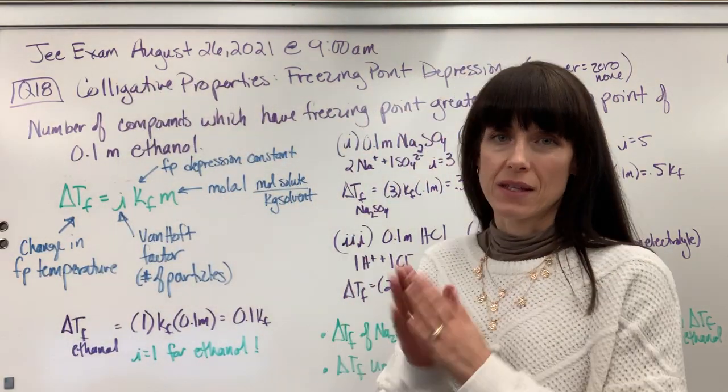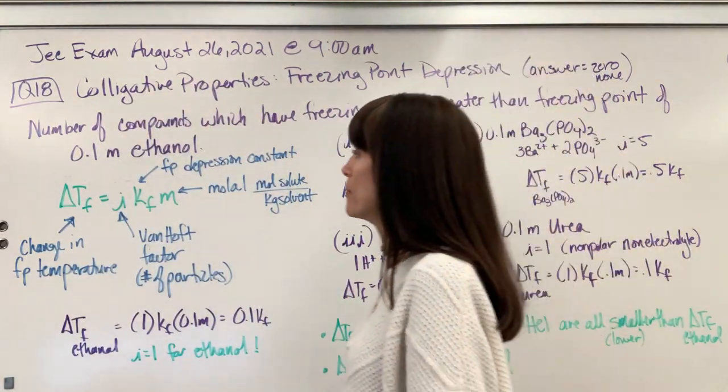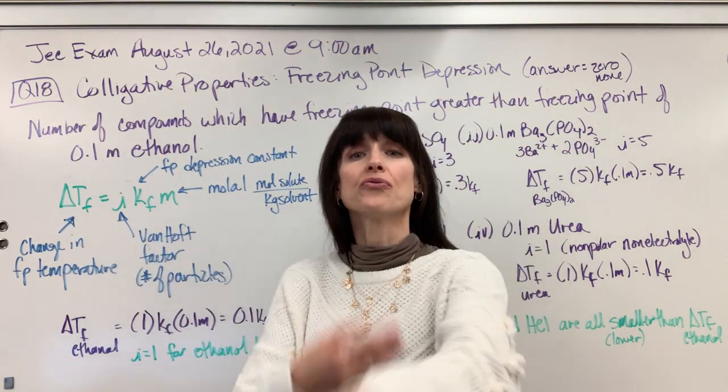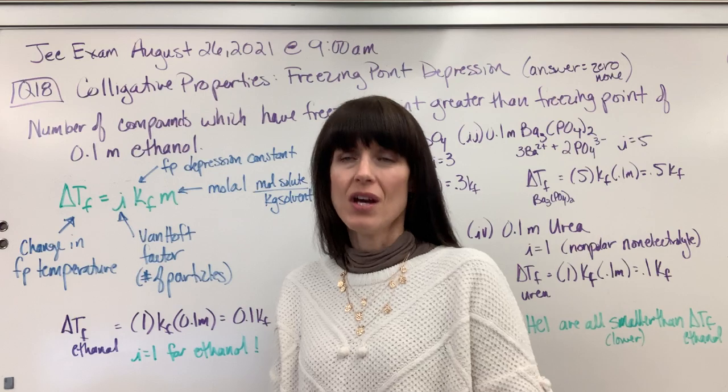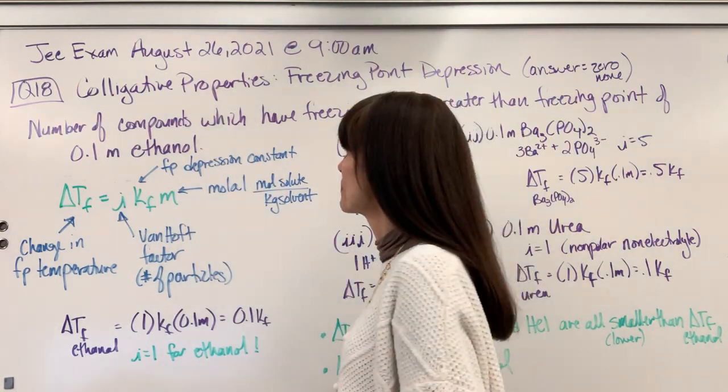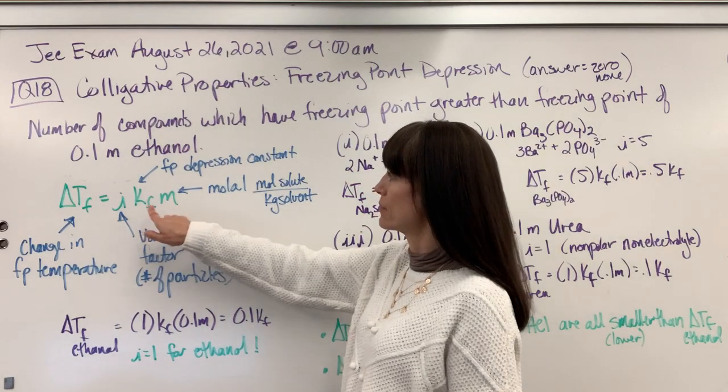So let's look at the theory behind this. It comes from this formula, the change in temperature for freezing point. So this isn't the new freezing point. It's just the change for the freezing point, how much lower it goes. It's going to be I times Kf times m.